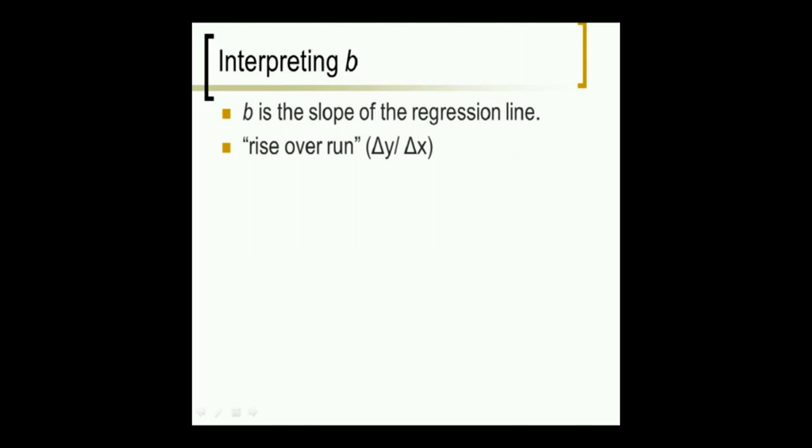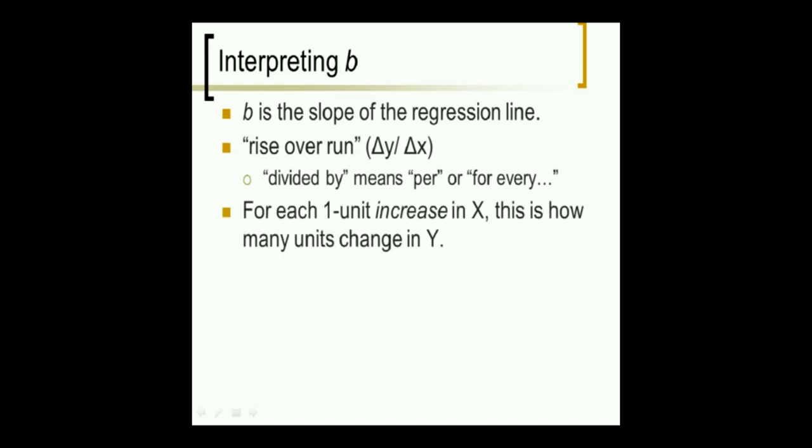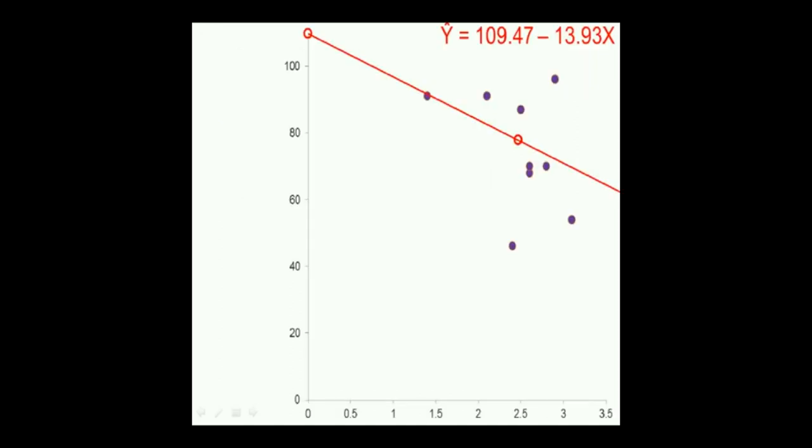The slope is always this many y's for one x. So, divided by means per, or for each, or for every, in mathematical terms. For each one unit increase in x, so one step going left to right on the x-axis, b is how many units change there are in y. If it's negative, then it's reduction in y. If it's positive, it's increase in y, and the number is the number of units change.